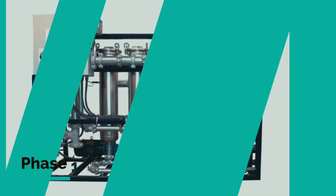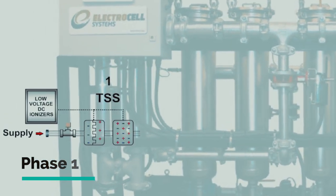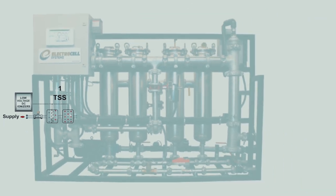Phase 1 of the 3-step treatment process is the application of alternating positive and negative electrical charges to the suspended particles using a low-voltage DC ionizer. This makes the oppositely charged suspended particles attract to each other and, as a result, grow in size and weight.